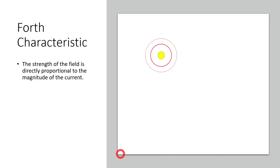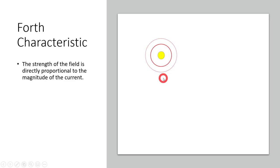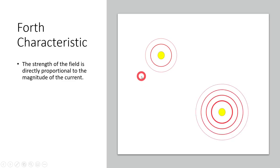The fourth characteristic: the strength of the field is directly proportional to the magnitude of the current. If I have one amp of current flowing through here, I'm going to have a certain magnetic field strength. There are multiple orbits around the wire, much like an atom, giving multiple lines of flux. If that has one amp, that would be the magnetic field. If I double that to two amps, we're going to get double the amount of field strength, and the field extends twice the distance away from the conductor.